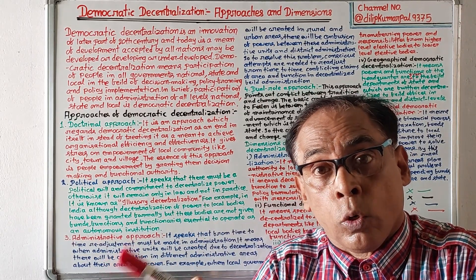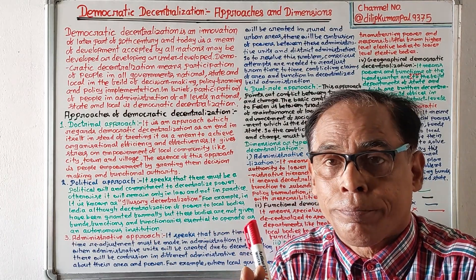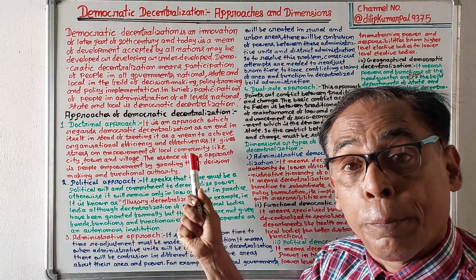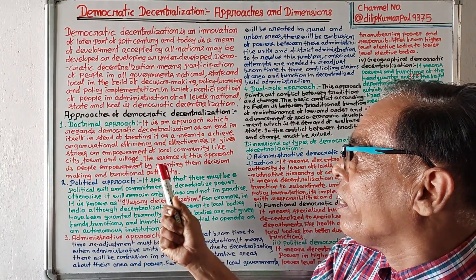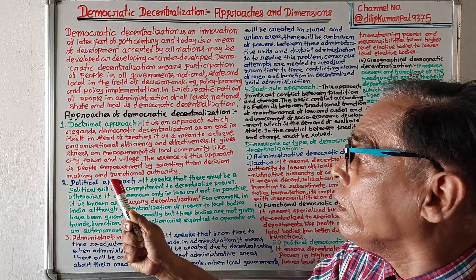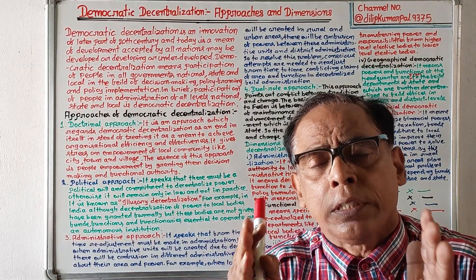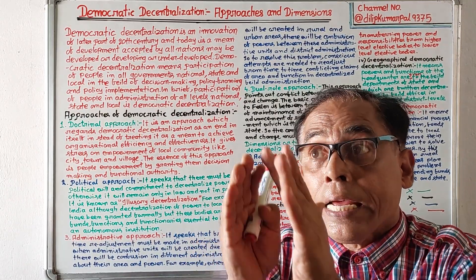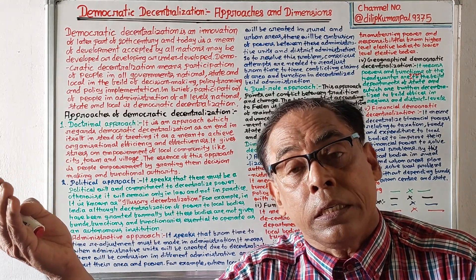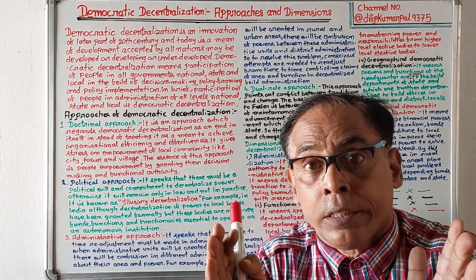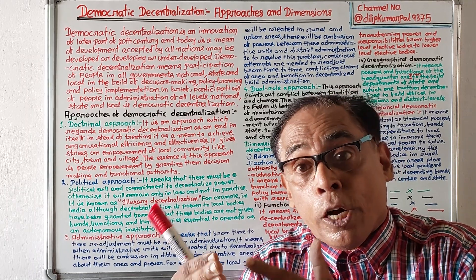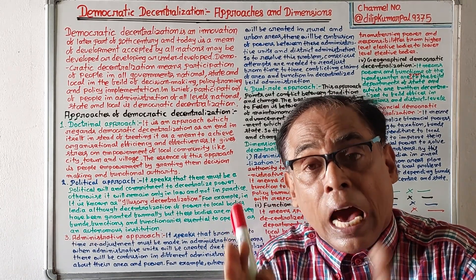Doctrinal approach gives stress on empowerment of local people — of city, town, or village. The essence of this approach is people's empowerment by granting them decision-making and functional authority. In summary, doctrinal approach speaks that democratic decentralization is an end in itself — only a doctrine — not a means to achieve organizational efficiency and effectiveness.